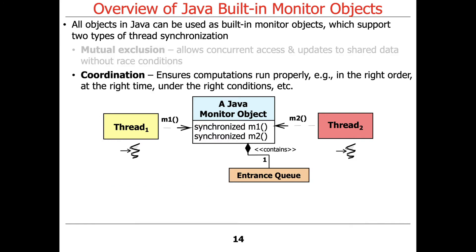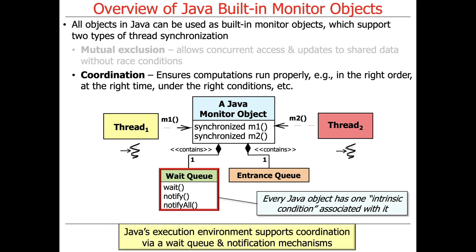The second thing is coordination, which allows computations to run in the right order, at the right time, under the right conditions. Java provides a wait queue with three methods: wait, notify, and notifyAll. Those are exposed via the Java Object class, which everything inherits from except for records. Every Java object has one intrinsic condition associated with it — so there's an intrinsic lock and an intrinsic condition. The JVM and Android runtime support coordination via this wait queue and the notification mechanisms inherited from Java Object.